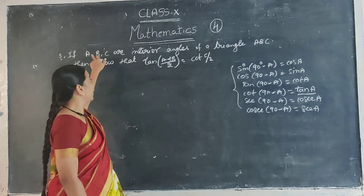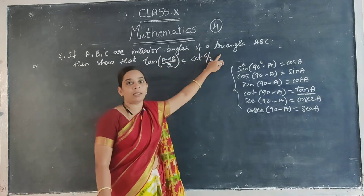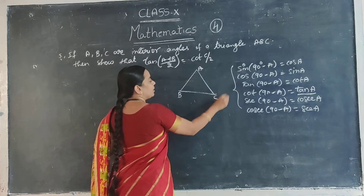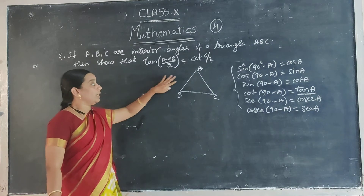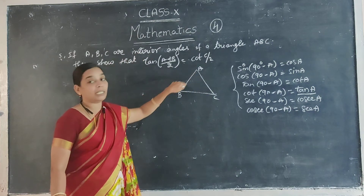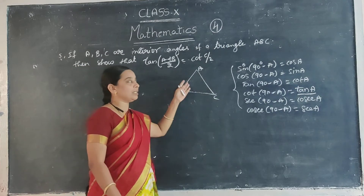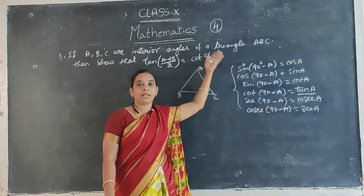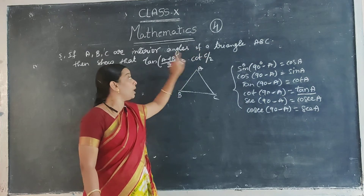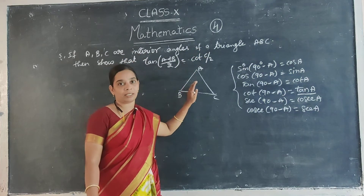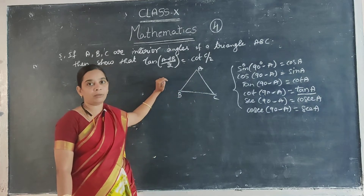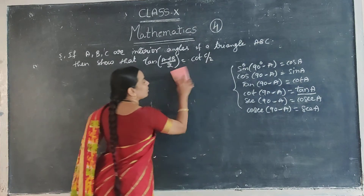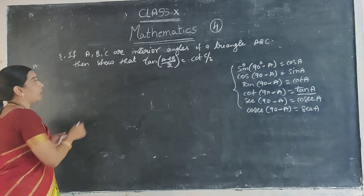Now this is question 5. A, B, C are interior angles of triangle ABC. We want to show tan((A+B)/2) = cot(C/2). Everyone knows the angle sum property: in any triangle — whether isosceles, equilateral, right angle, or any type — the sum of three interior angles is equal to 180 degrees. So, A plus B plus C is equal to 180.